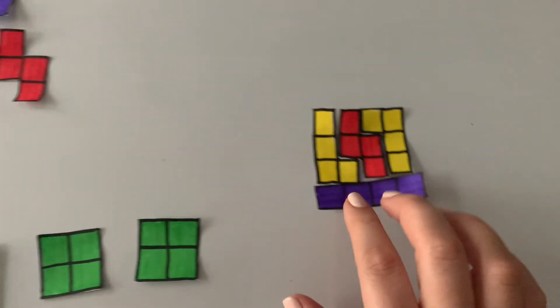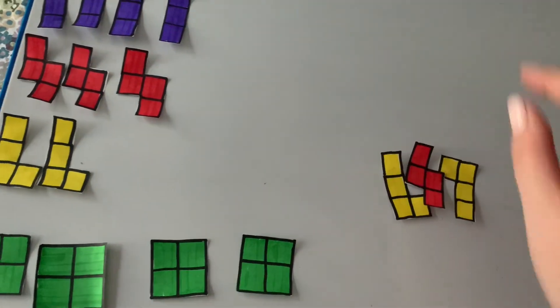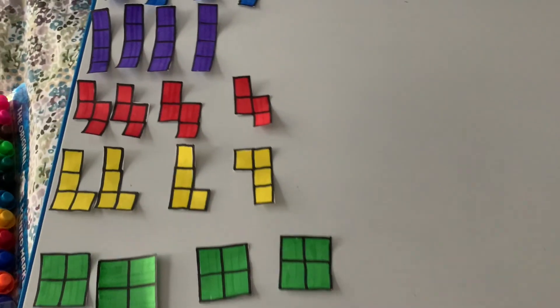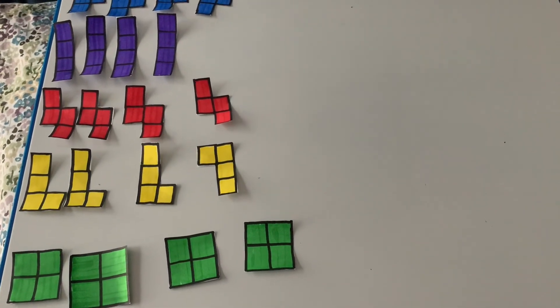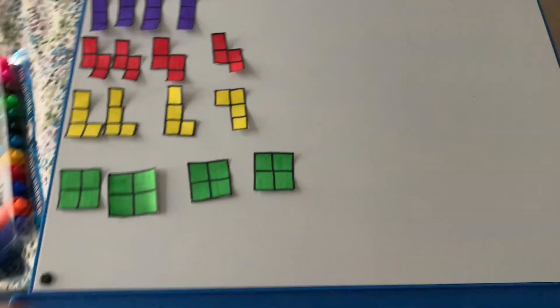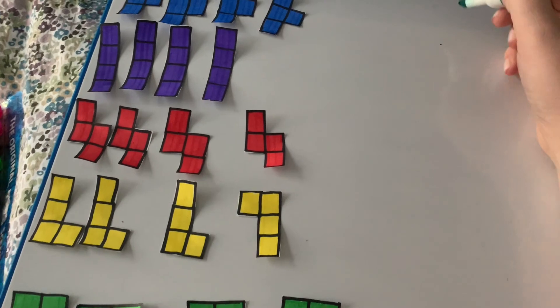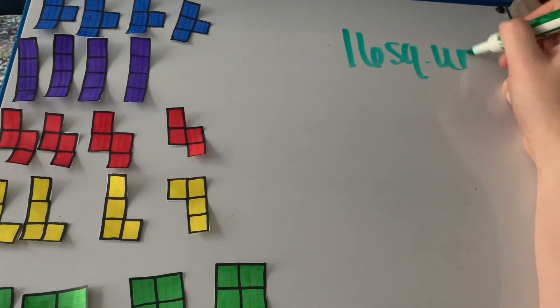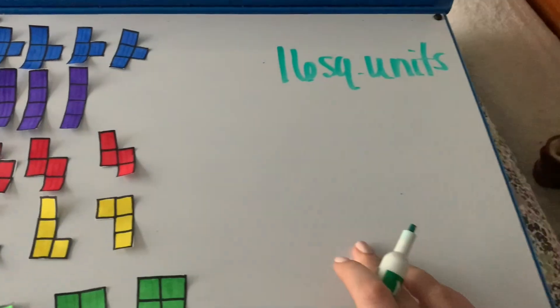Okay so what I want you to do right now is I want you to go and try to make one or two more rectangles of 16 square units. Pause the video, go ahead, do that, take a picture and send it to me before you move them. Okay so I'll write that down. The first one you're doing is 16 square units. Go ahead.